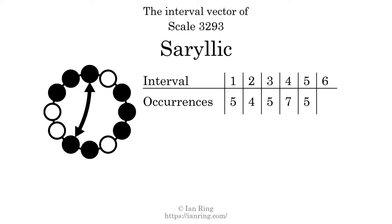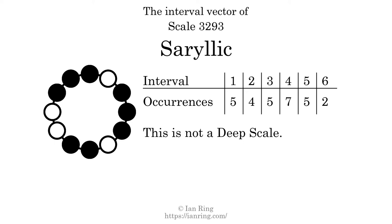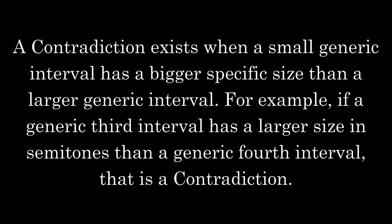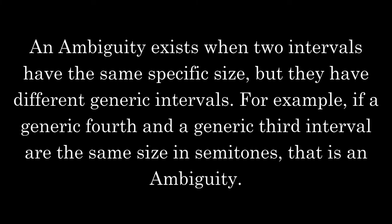Each interval does not appear in this scale a unique number of times, so this is not a deep scale. Heteromorphisms are comparisons between every interval in a set. They can be classified as contradictions, ambiguities, and differences. A contradiction exists when a small generic interval has a bigger specific size than a larger generic interval. For example, if a generic third interval has a larger size in semitones than a generic fourth interval, that is a contradiction. The number of contradictions in this scale is 10. An ambiguity exists when two intervals have the same specific size but different generic intervals. For example, if a generic fourth and a generic third interval are the same size in semitones, that is an ambiguity. The number of ambiguities in this scale is 53.